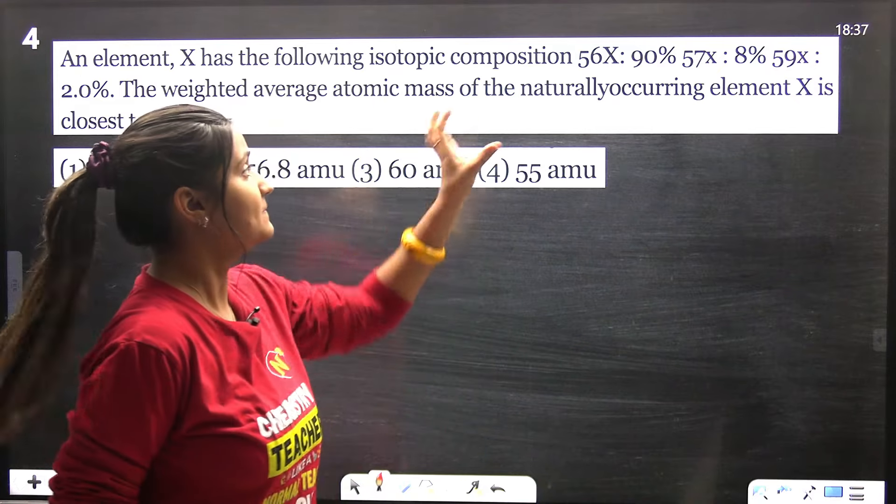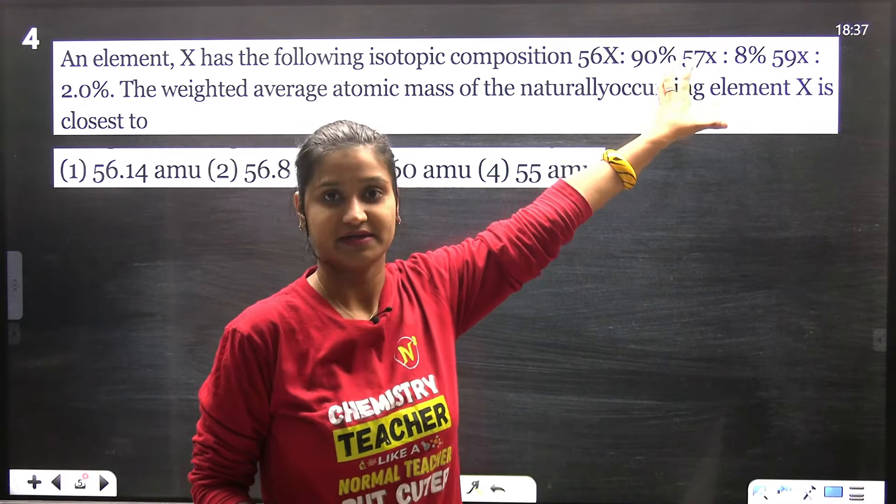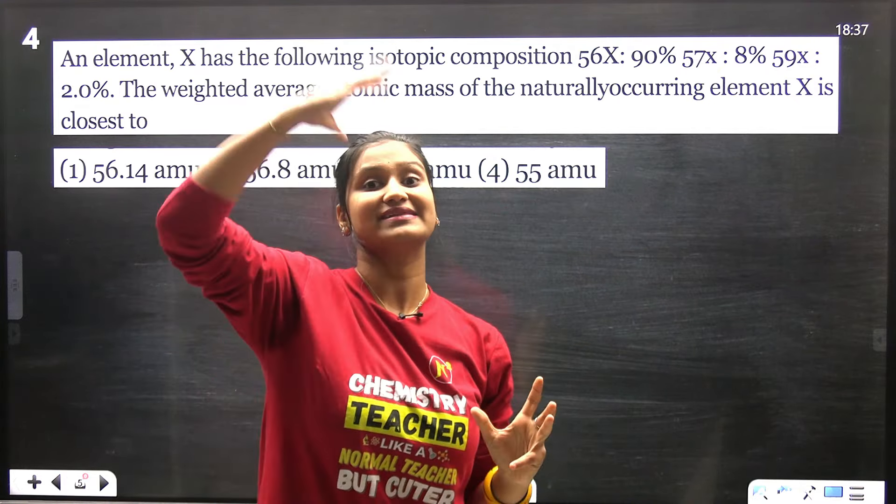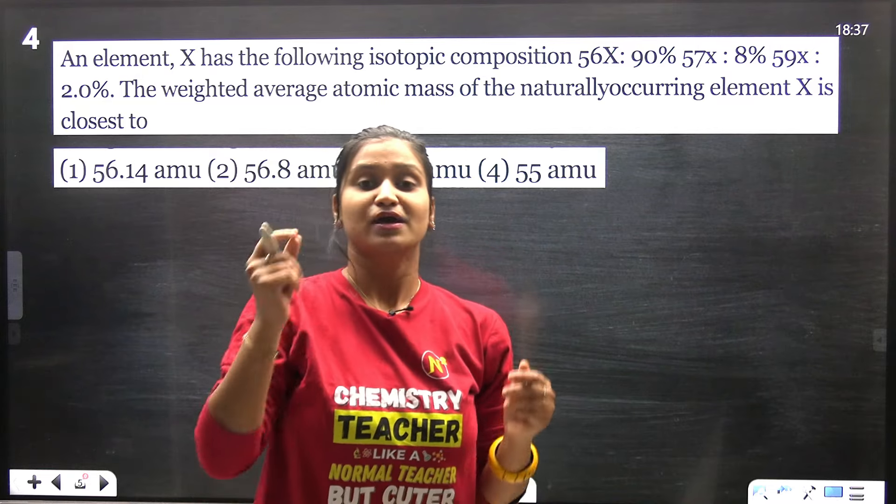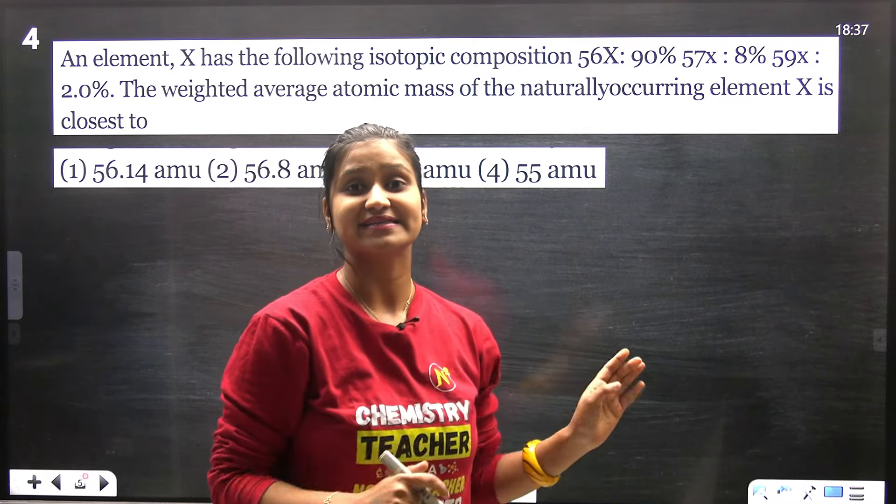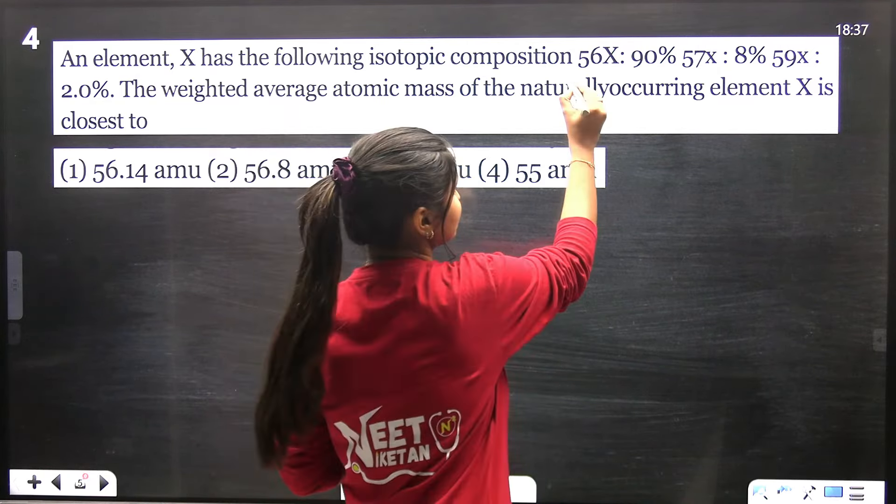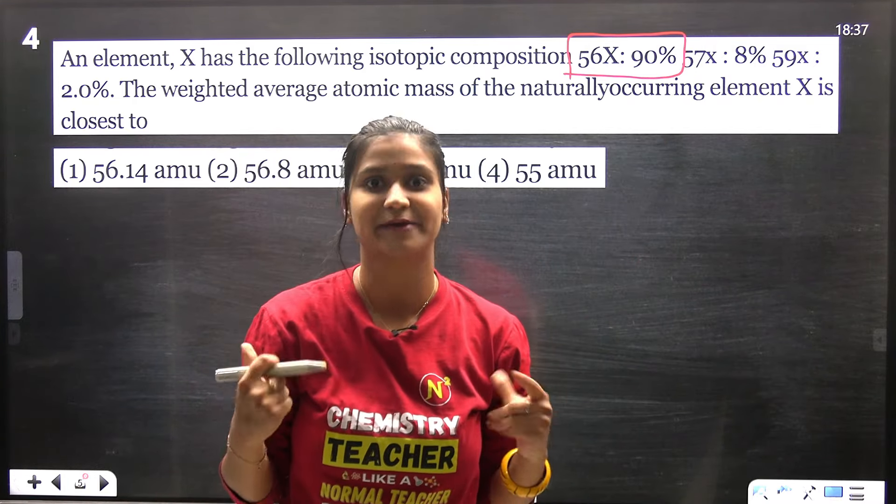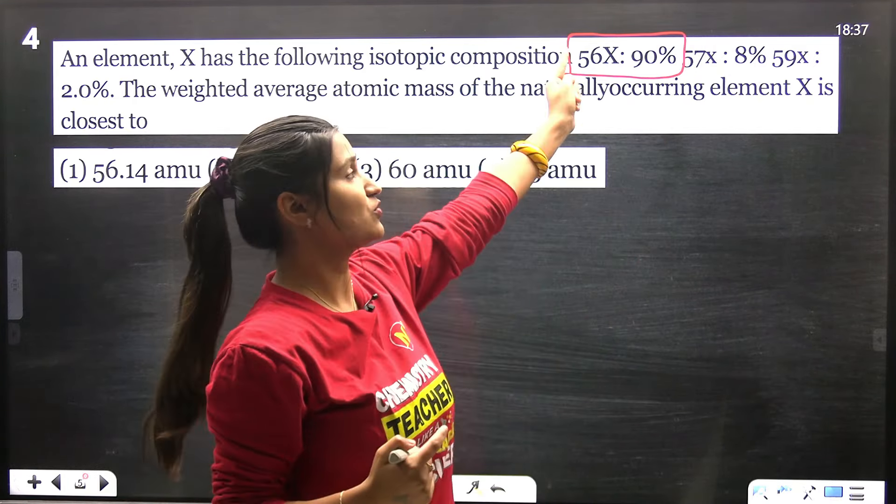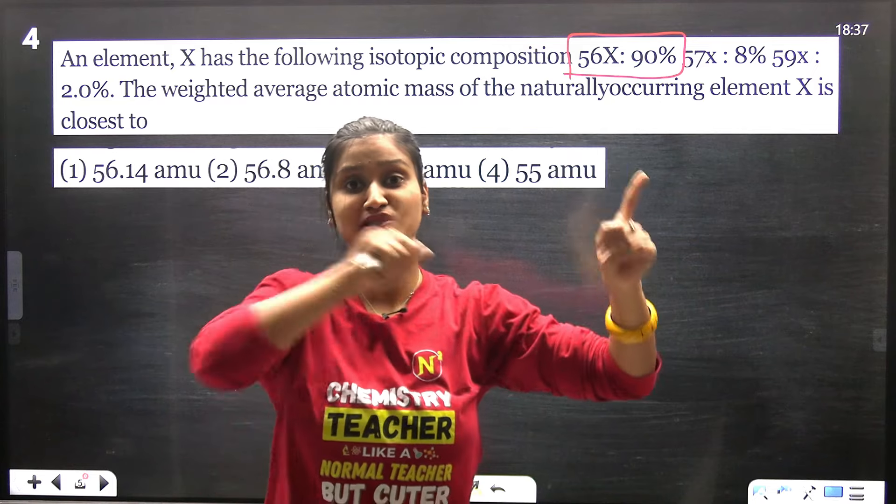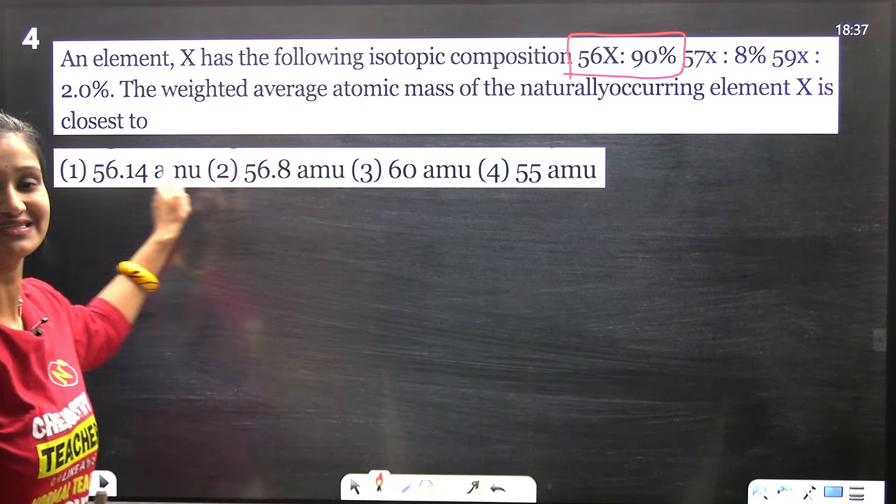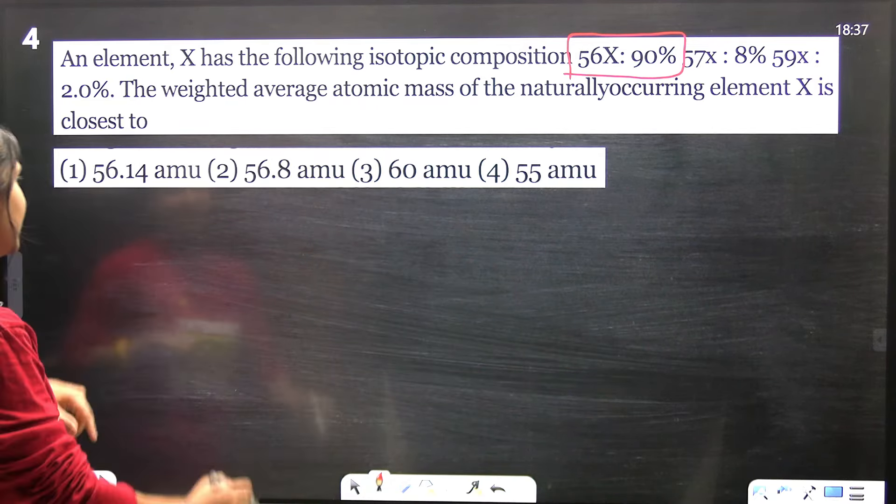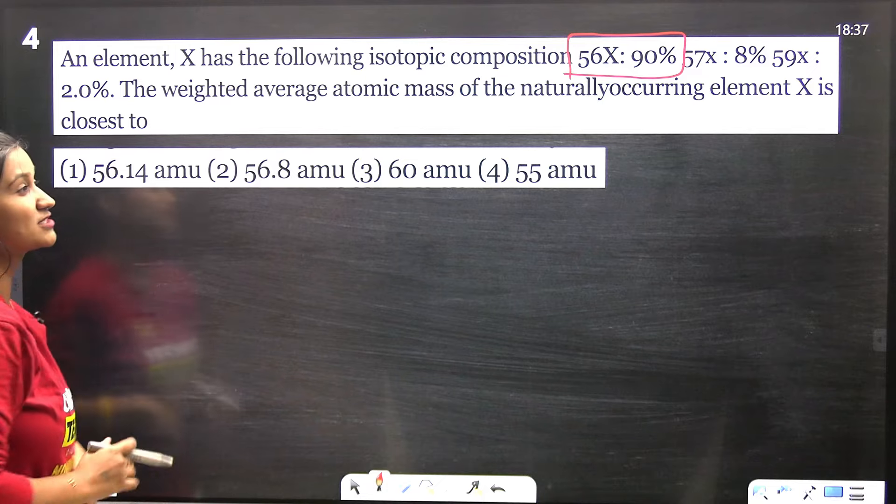There is no need for any calculation. Whatever mass exists most in nature, the average is going to be closest to that. Because it exists 90% in nature, its atomic weight will be closest to 56. Check which value is closest to 56 - is it 56.14 or 56.8?